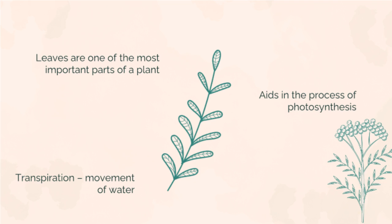To briefly state about the process of photosynthesis: it involves trapping the solar energy to convert water and carbon dioxide to glucose, sugar, and oxygen. The plant will use the sugars generated from this process for growth and development. They also play a major role in transpiration, which is the movement of water from the roots to the whole plant.